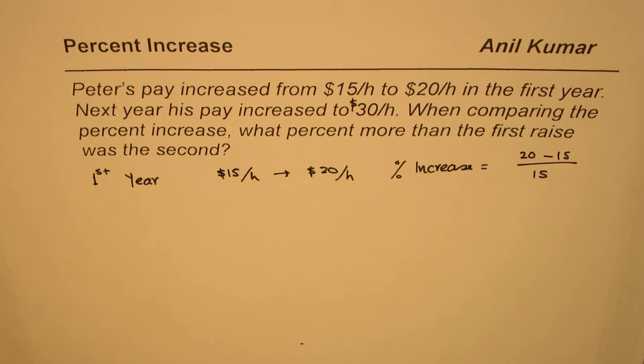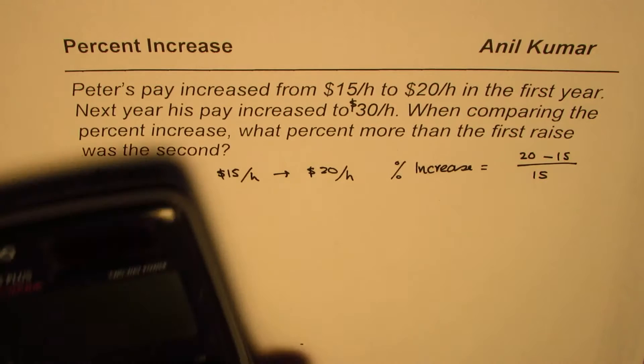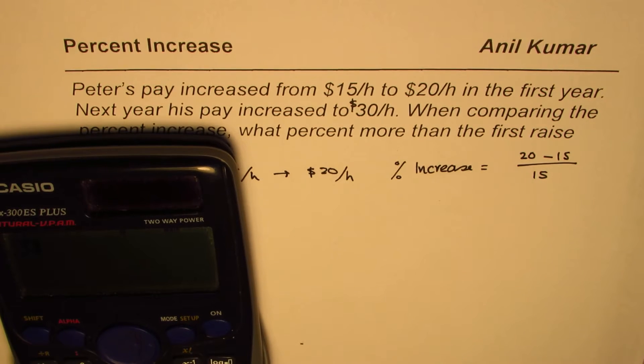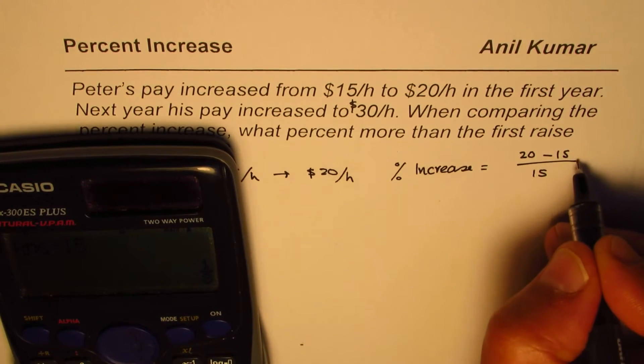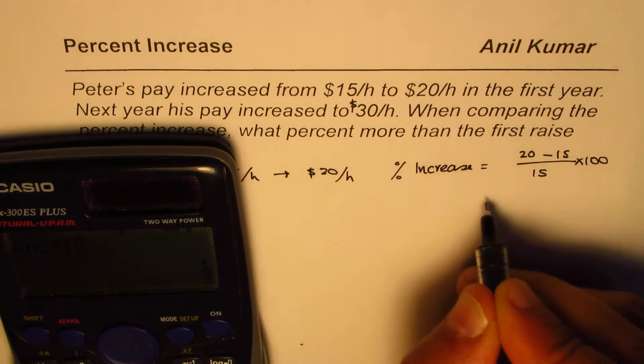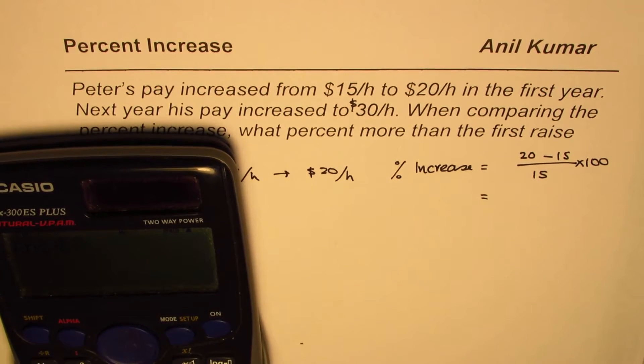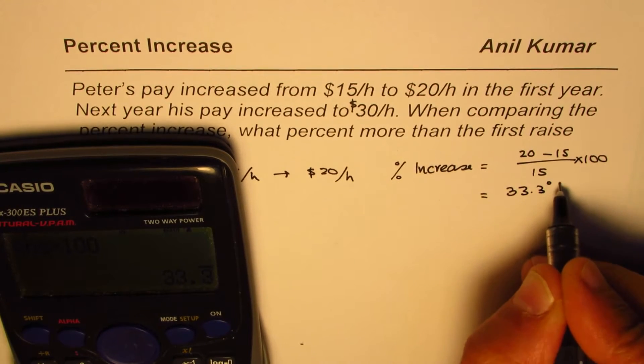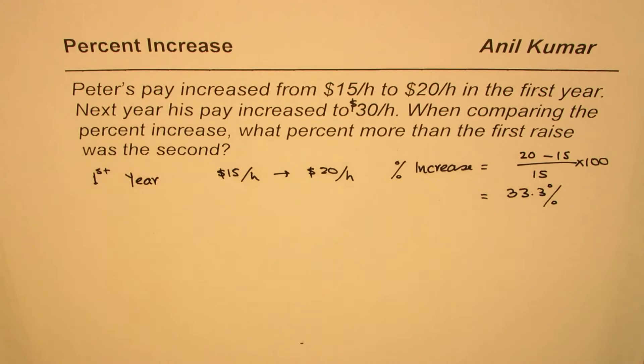We can use calculator and find this value. So what we have here is 20 minus 15 which is 5 divided by 15, and that's a decimal value. We can multiply this by 100 to get in percent, so times 100 equals 33.3 percent. So that is percent increase